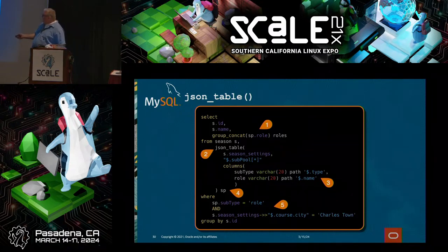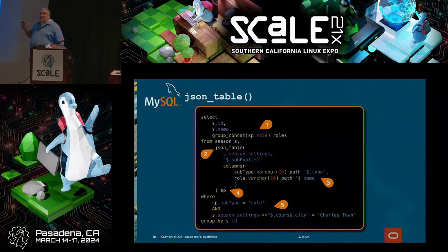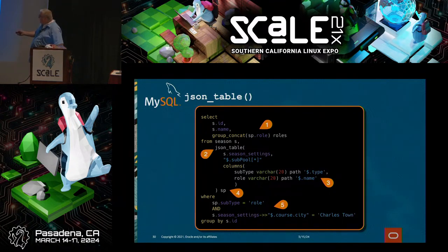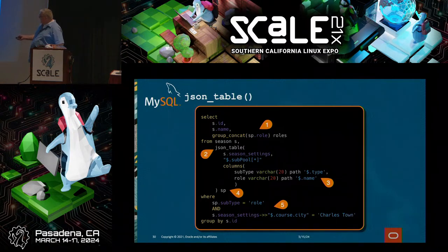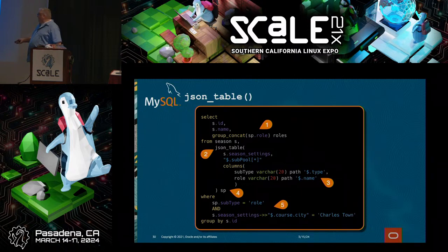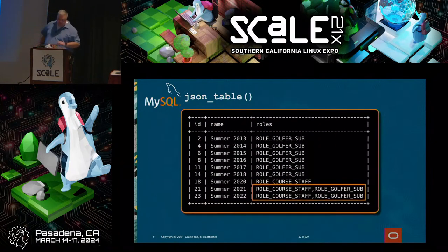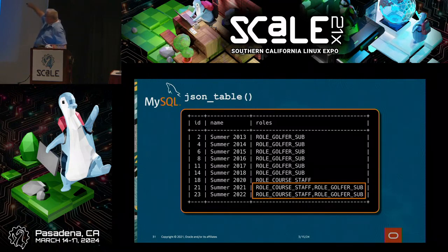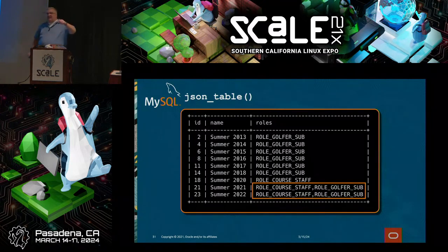We also define a role column as VARCHAR(20) with path dollar sign dot name. Whenever you use JSON_TABLE, you must use an alias — if you don't, it'll throw an error. That's where the sp alias comes from. In the WHERE clause we say where the subtype column equals role and the course city equals Charlestown, then group by the ID. The result shows that for the first group there's just one role, but for the last two there are multiple roles — each from a particular element inside the subpool array. JSON_TABLE is very helpful if you need to search through data in a JSON array.